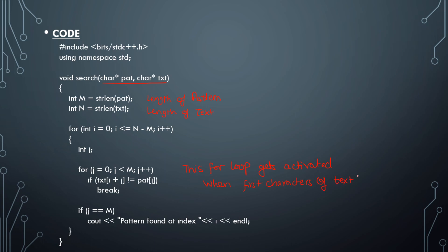The inner nested for loop is activated whenever your first characters of pattern and text match. Then if j equals m — which is the length of the pattern — you print a statement that the pattern is found at index i, because we print the index at which the pattern starts. This code works and you can test it with various test cases, though for smaller inputs. This is not an ideal algorithm, as the name 'naive' suggests.